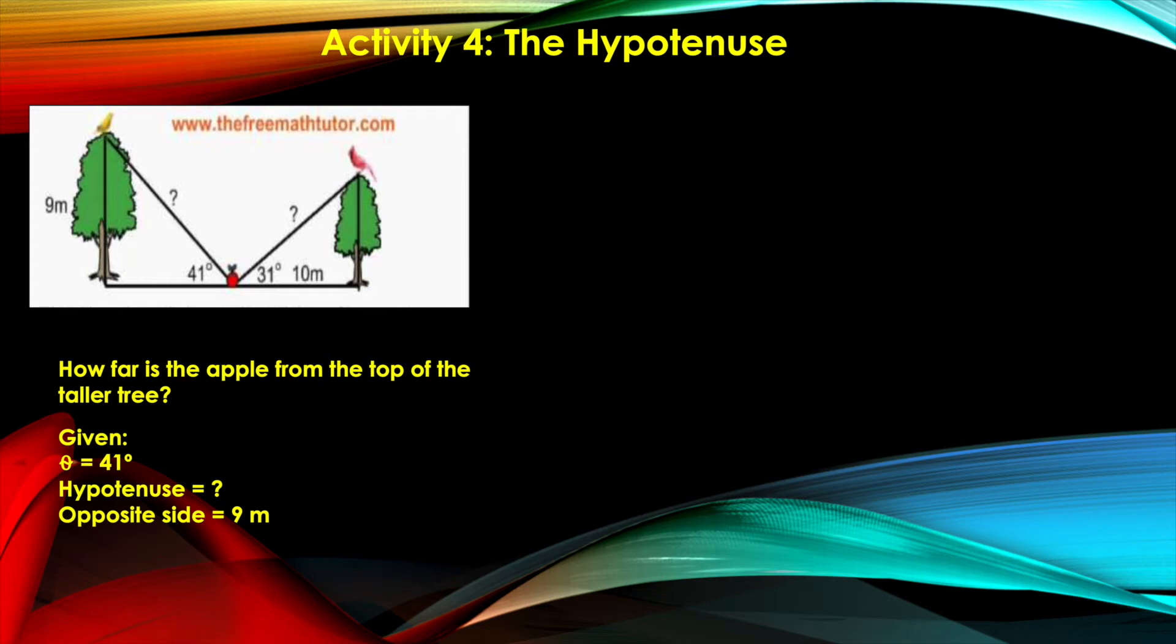Now what appropriate function can we use here? We are looking at the function with the hypotenuse and the opposite side. There are two of them. Remember, it's easier when we put the unknown side on top of the ratio. So it should be hypotenuse over the opposite side. What function is that?